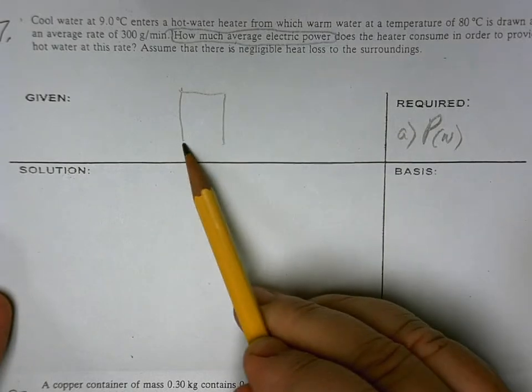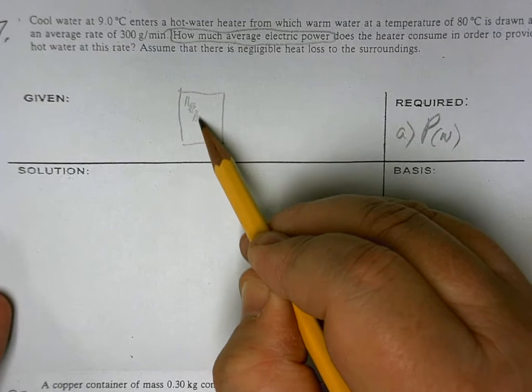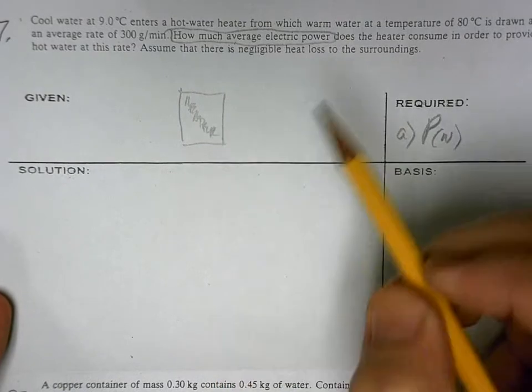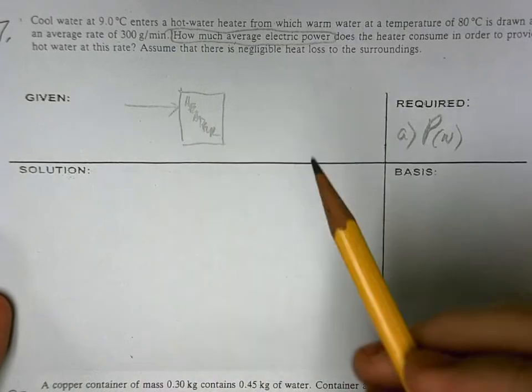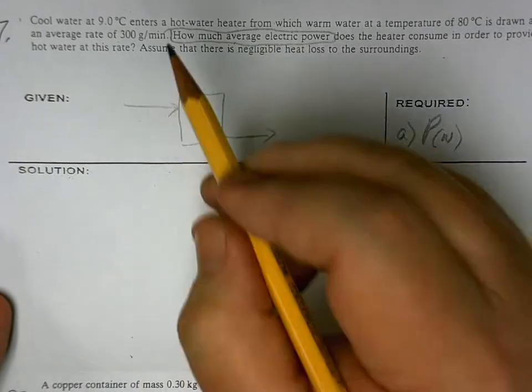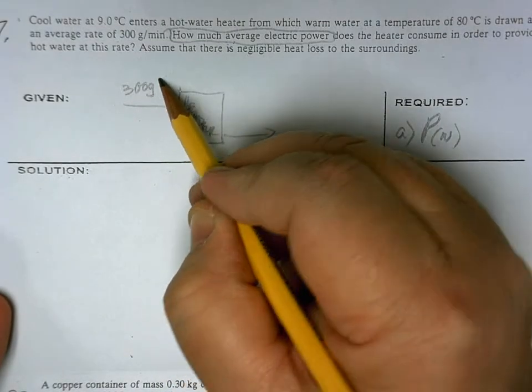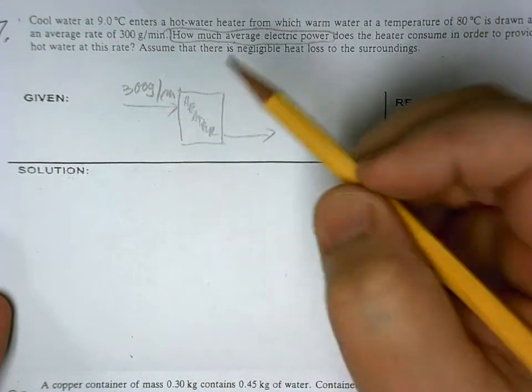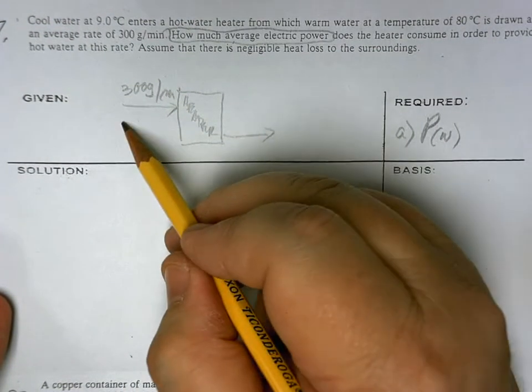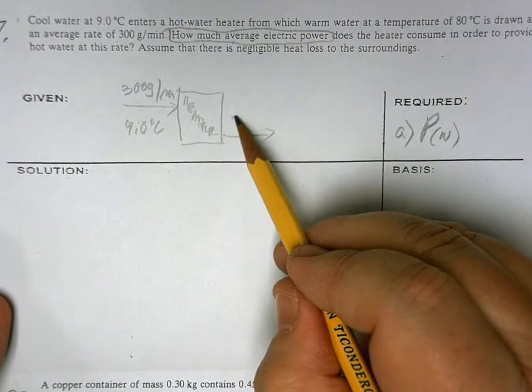Usually the materials come in horizontally in these diagrams and they leave the same way. So 300 grams per minute, at what temperature? 9.0 degrees centigrade.